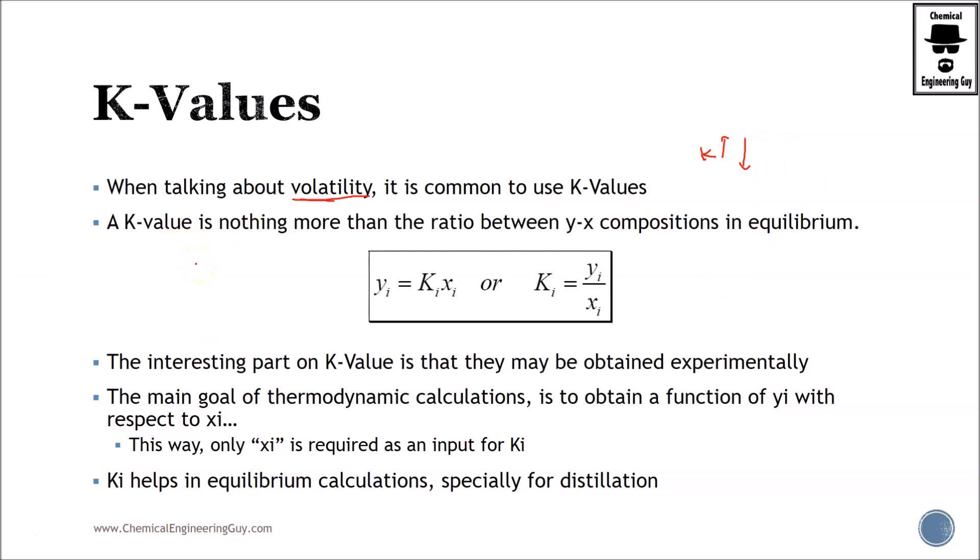K-values can be obtained experimentally with models or calculated, but it's nothing more than the ratio of the composition in vapor phase and the liquid phase of species i.